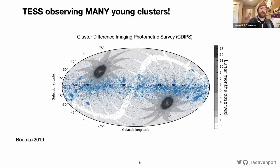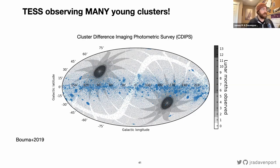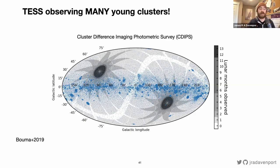TESS may also answer our prayers for observing many more young clusters. An ancillary data set now available on MAST — the Cluster Difference Imaging Photometric Survey (CDIPS) by Bouma et al. — provides light curves for known young stars in clusters and moving groups in TESS, with more than 150 clusters sampled, many with multiple sectors of data. This will fill our need for many more cluster benchmarks to populate the rotation evolution and study the stall and spin-down. This is an area where we're excited for collaboration.